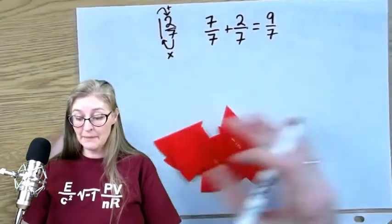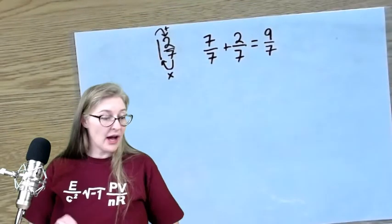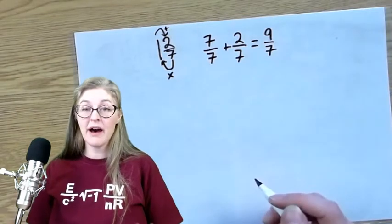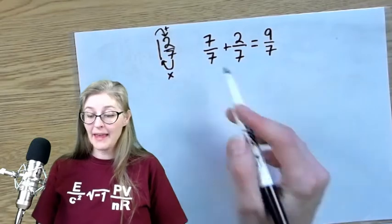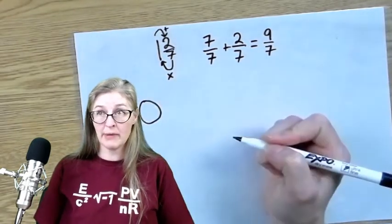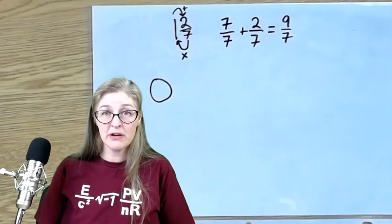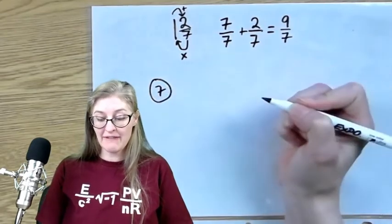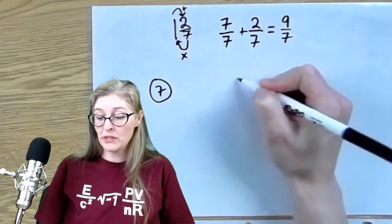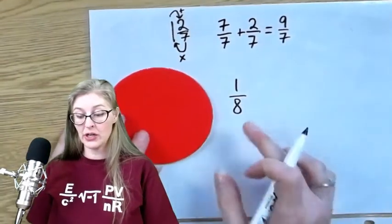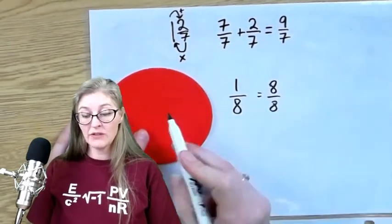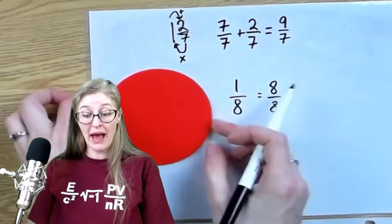From here I can start to see the pattern of how this is going to happen every time. Math relies on patterns — we love patterns and the predictability of it. Every single time I have a whole number, I know that I'm going to multiply it by whatever the denominator is. In this case, I knew I was going to get seven out of that whole number. If I wanted to exchange a whole number and turn it into eighths, I would end up with eight-eighths. So all I have to do is multiply by eight and I'll know how many pieces I can get.